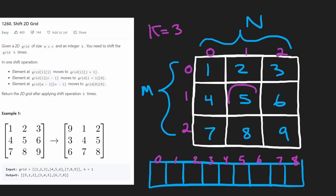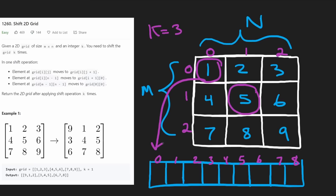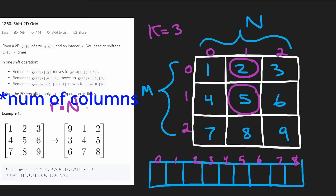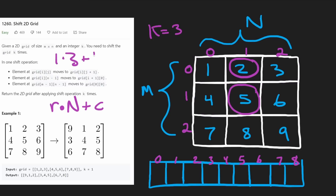So how do we convert an arbitrary two-dimensional coordinate into a one-dimensional one? We take the row it's at and multiply it by N — the number of columns — then add the column itself. For example, if we're at row 1 and the grid has 3 columns, that's 1 times 3 plus 1, which gives us index 4. So that position maps to index 4 in the one-dimensional array.